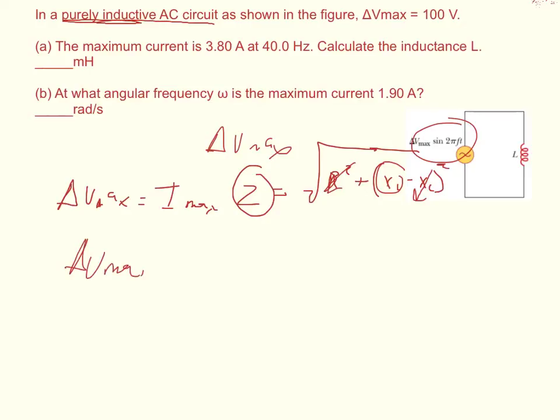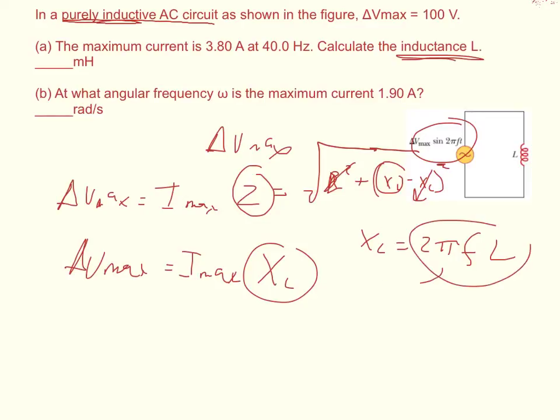And so we just take the inductive reactance squared and take the square root of that. So delta V max is equal to I max times the inductive reactance. Now what we're wanting to calculate is the inductance. So let's find the equation that relates the two. Inductive reactance is equal to 2 pi times the frequency times the inductance. So we can substitute that into our equation here and get delta V max is equal to I max times 2 times pi times the frequency times the inductance.